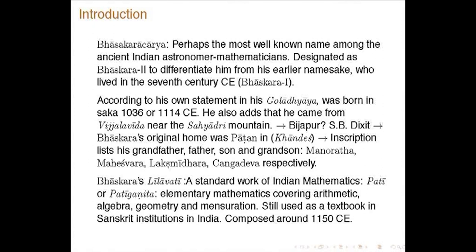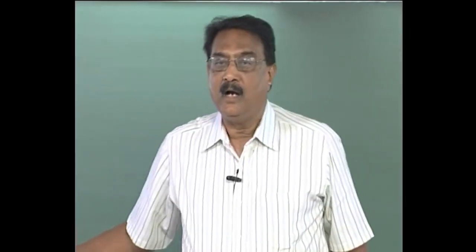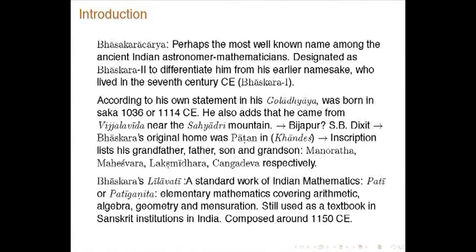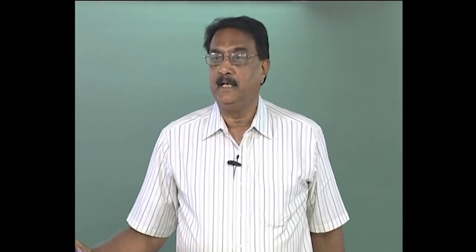Most people in India would have heard his name, and he is designated as Bhaskara 2 to distinguish him from his predecessor and namesake Bhaskara 1, who lived in the 7th century. According to his own statement in the work Goladhyaya, which is part of his famous work Siddhanta Shiromani, he was born in the Shaka year 1036, corresponding to 1114 CE. He also adds that he came from Vijayavira near the Sahyadri mountain.